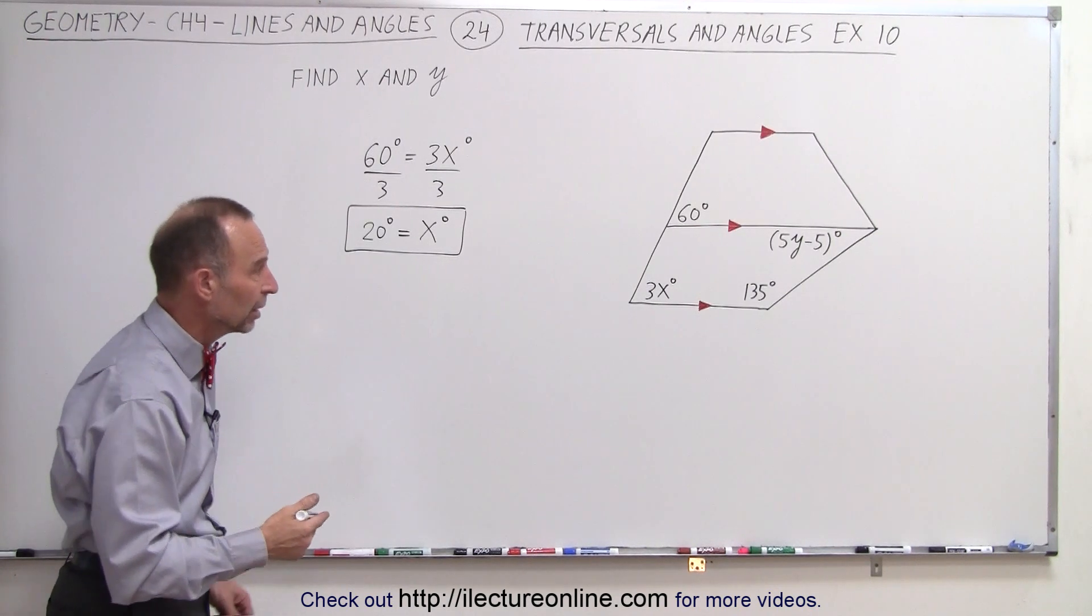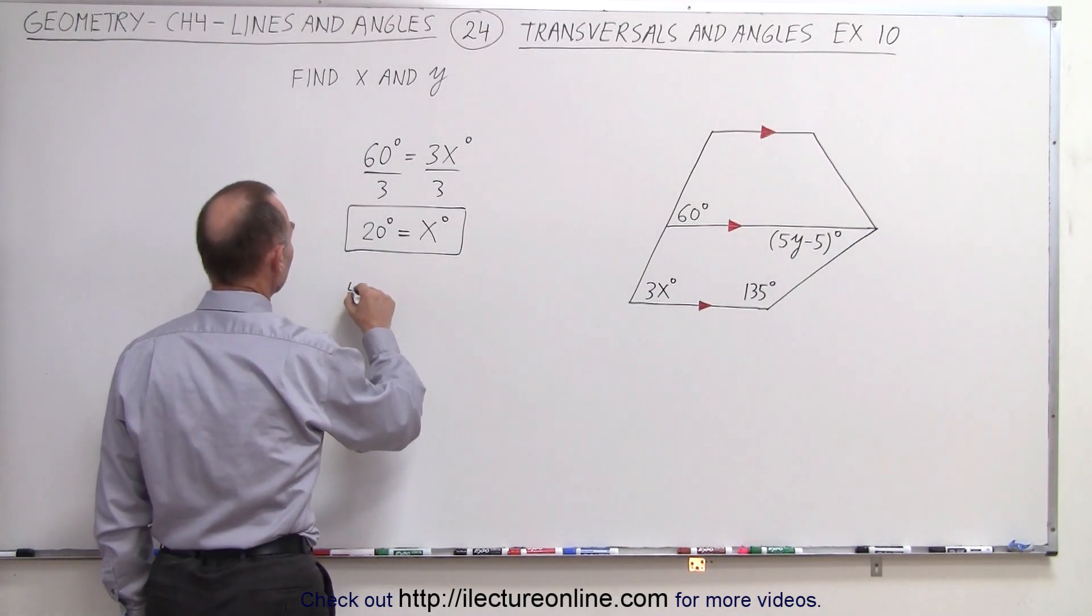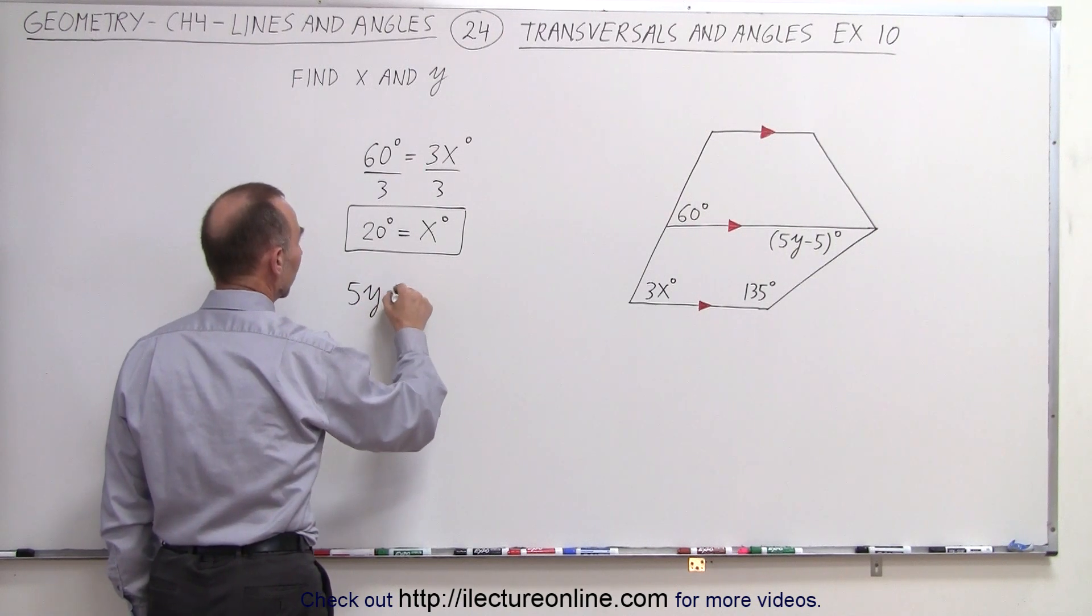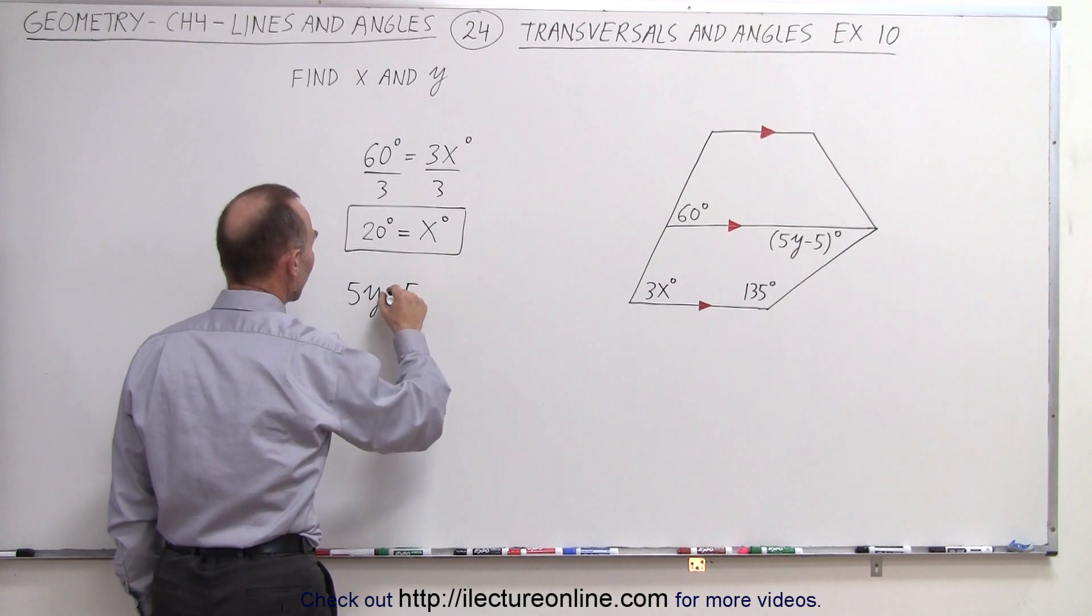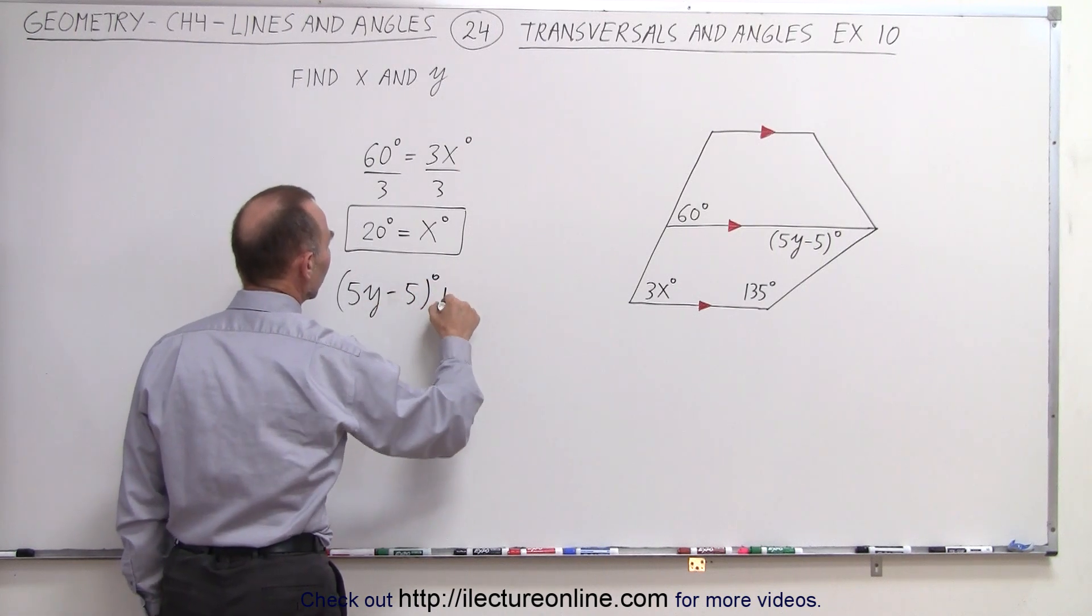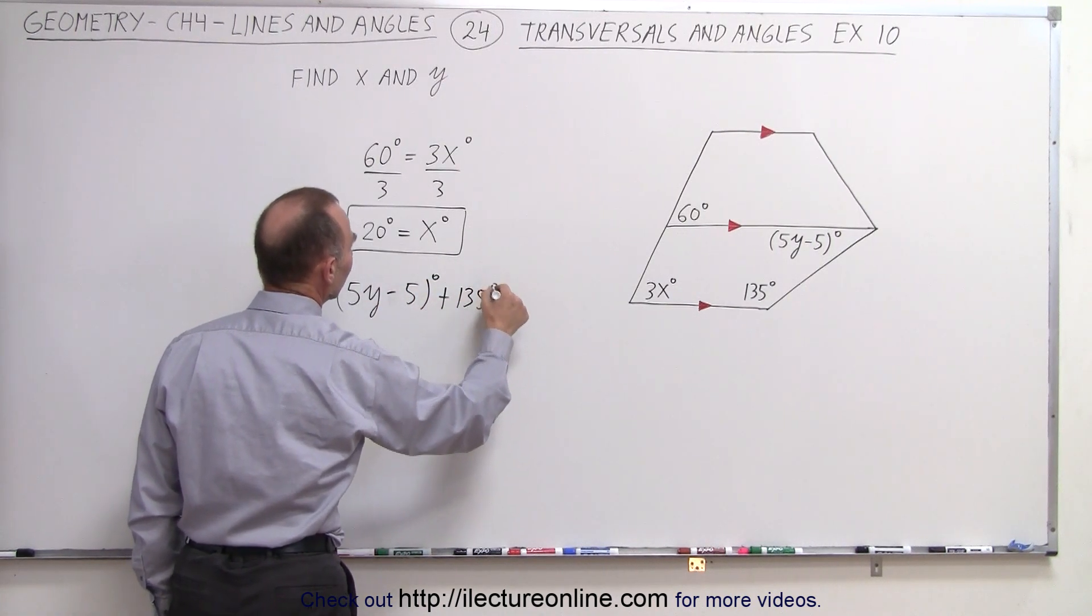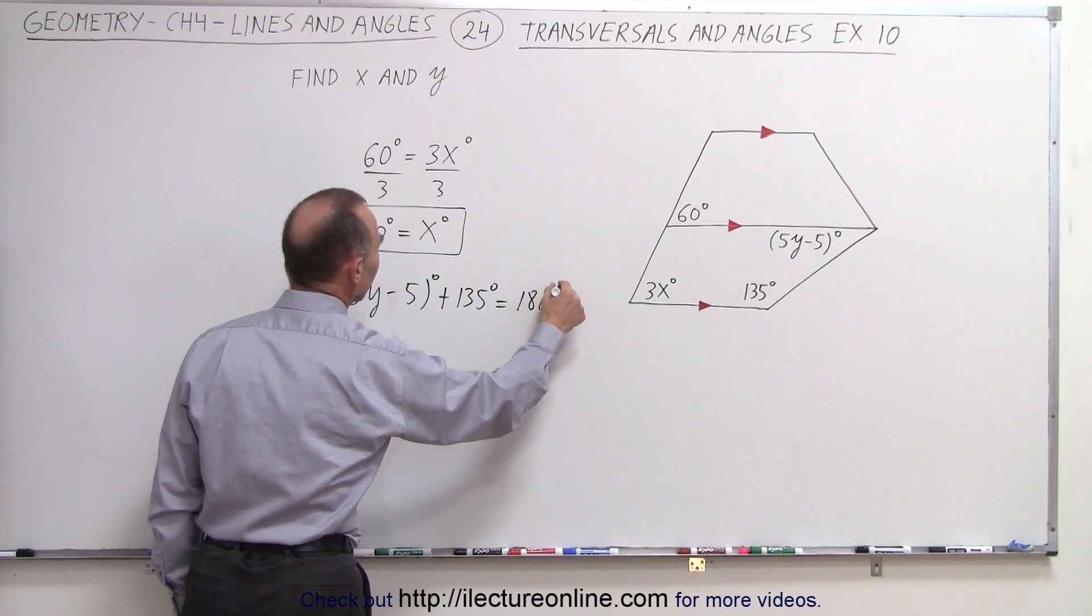In other words, they are supplementary. What we can then do is say that 5y minus 5 degrees plus 135 degrees must add up to 180 degrees.